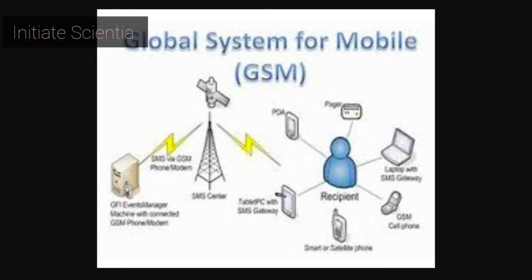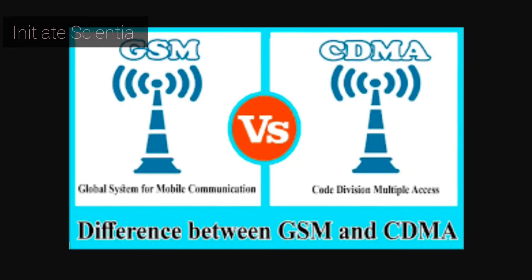Pico cells are small cells whose coverage diameter is a few dozen meters. They are mainly used indoors.